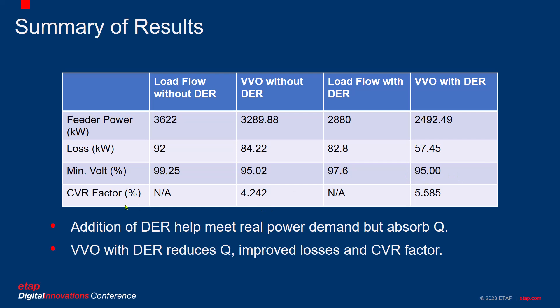The CVR factor is another interesting parameter used in the industry. It is a ratio of the peak shaving load saved as a percent of the average load, over the total difference in voltage that is reduced in per unit. For the case with DER, this number is higher. It logically makes sense because our final minimum voltage is still 95%, so there is not much change in the voltage differential, but in terms of feeder power we are reducing significantly, which helps bring about this higher CVR factor.